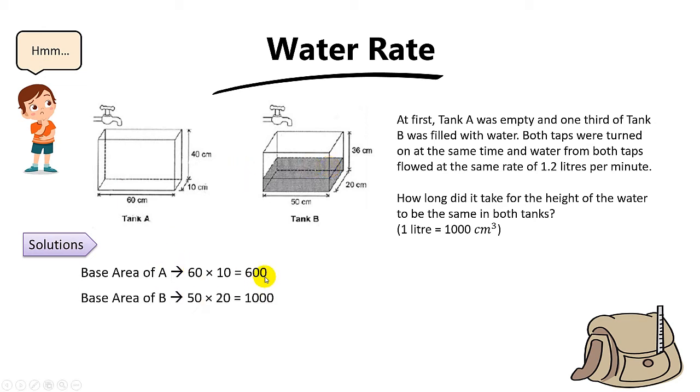So the first step is to find the base area of A which is 600, then the base area of B is 1000. And now you find in one minute how much of the water level increase in tank A. The answer is you take the water volume here which is 1200 divided by the base area, you get 2 cm. In other words, in one minute tank A's water level increases by 2 cm.